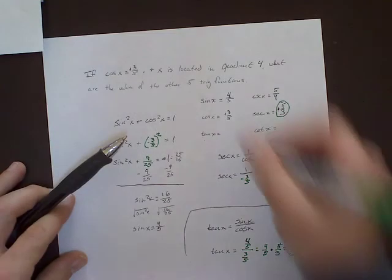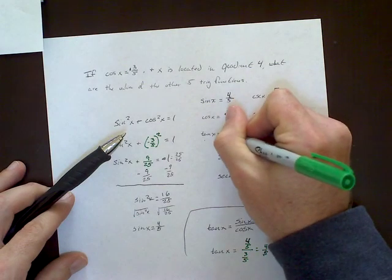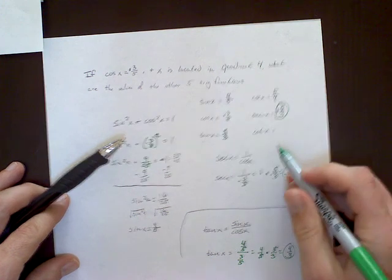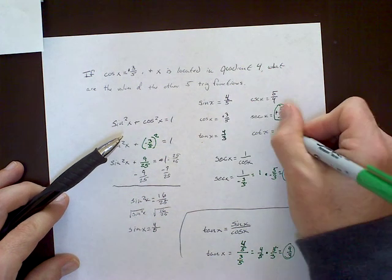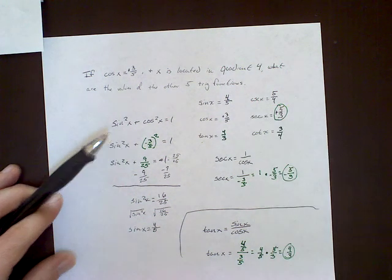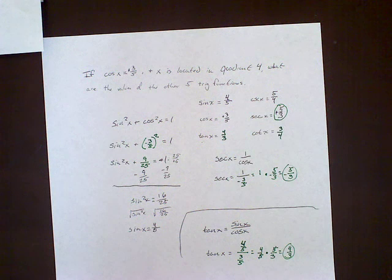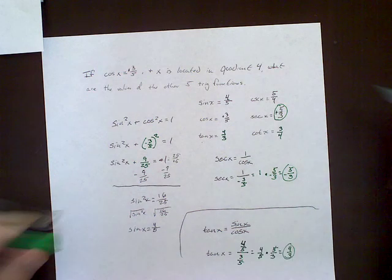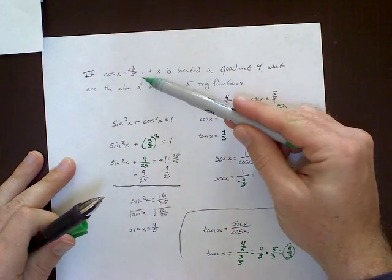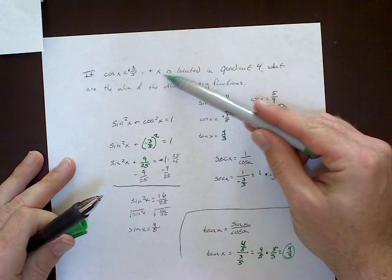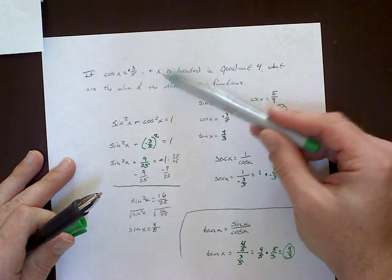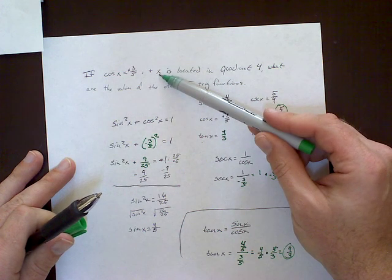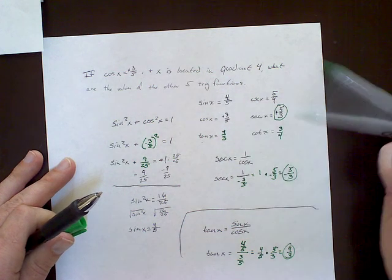So our tangent is 4 over 3. So then we go ahead and put 4 over 3 for the tangent, and then the cotangent, you just flip that, and that becomes 3 over 4. So now, as far as the calculations, we're all set. We're done. We got all the values here. But notice, we've only really focused, if we look back at the question, on this first part, we haven't even looked at this, x is located in quadrant 4. What that's saying is, the angle, x, is located in the fourth quadrant.